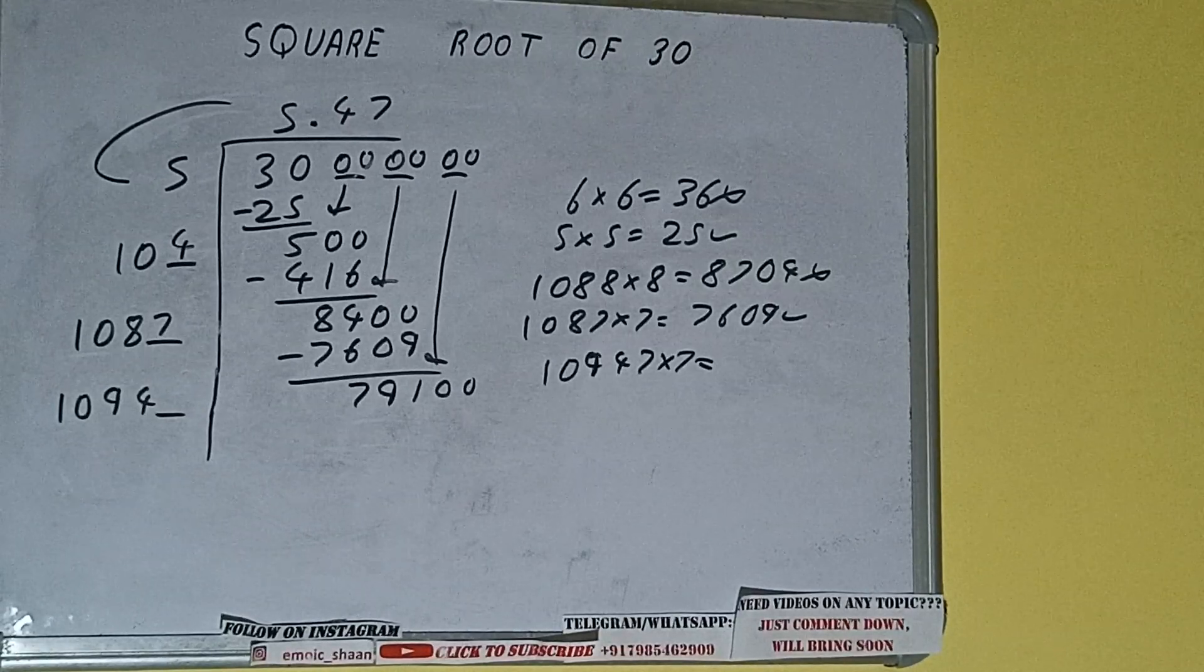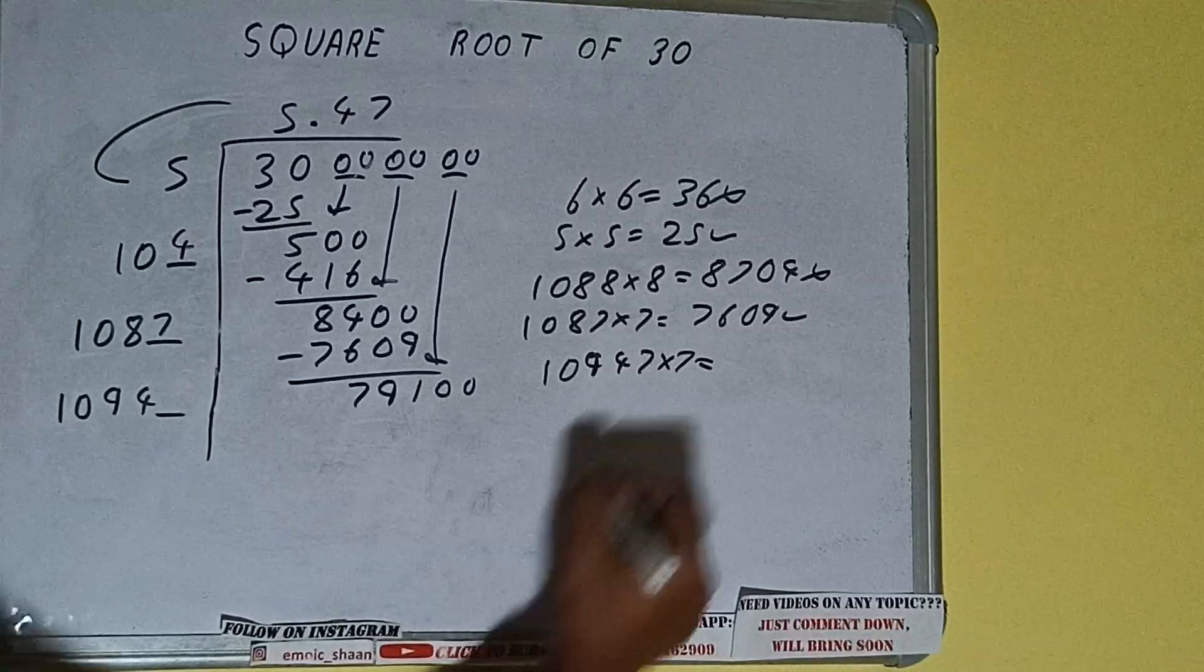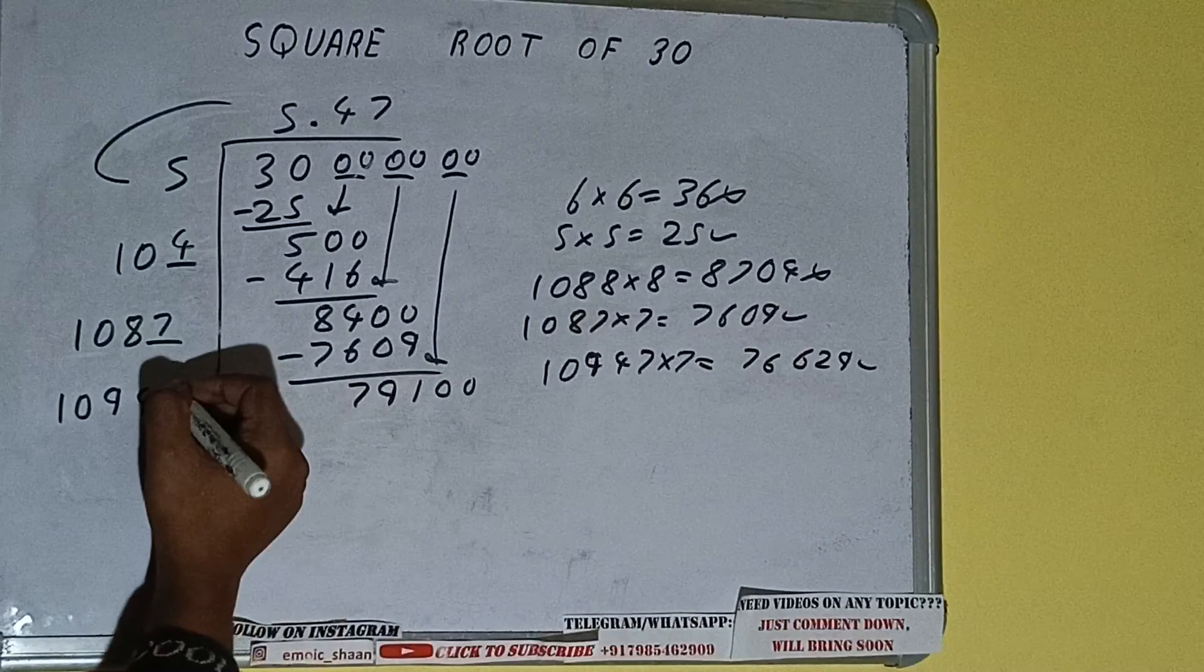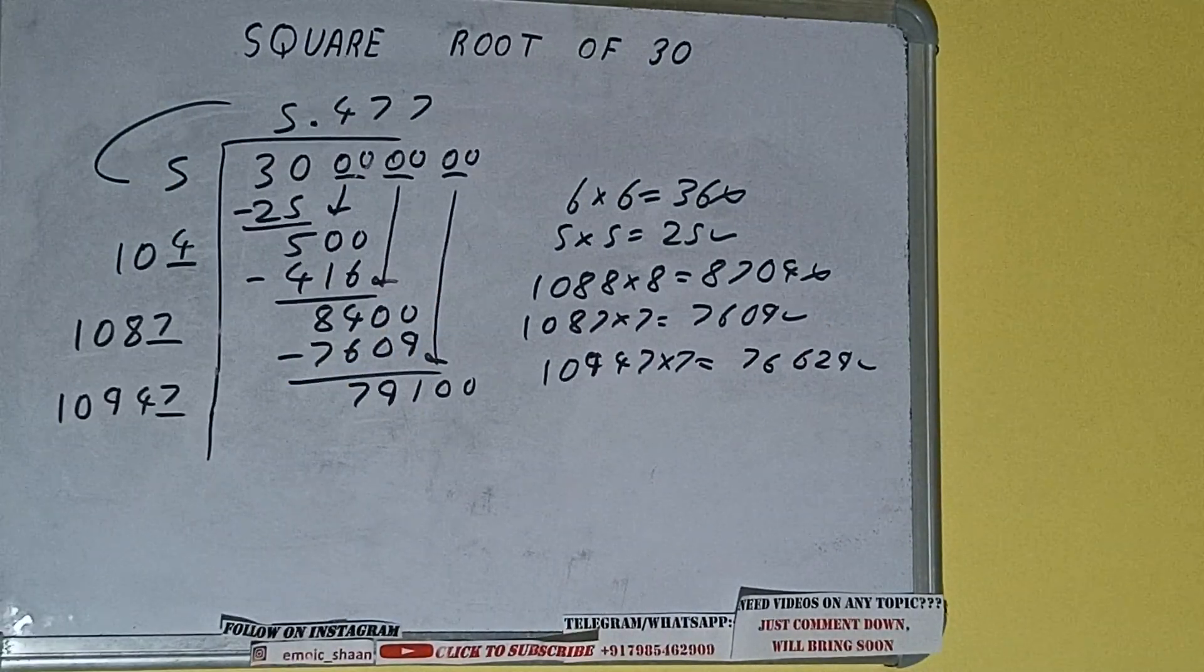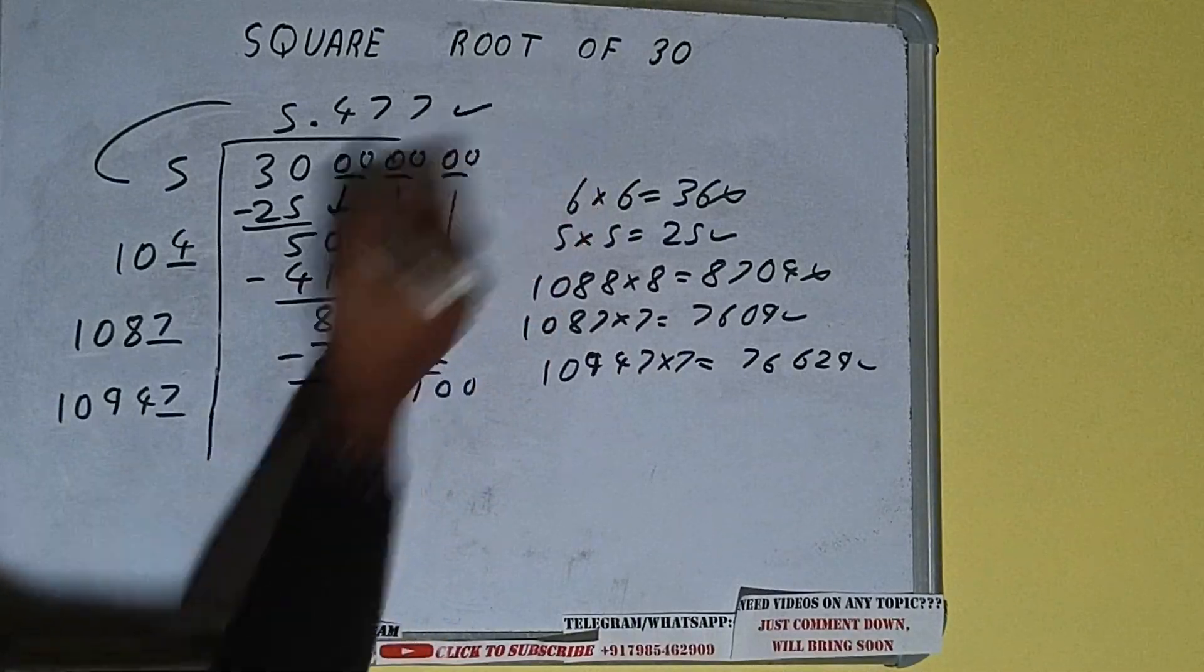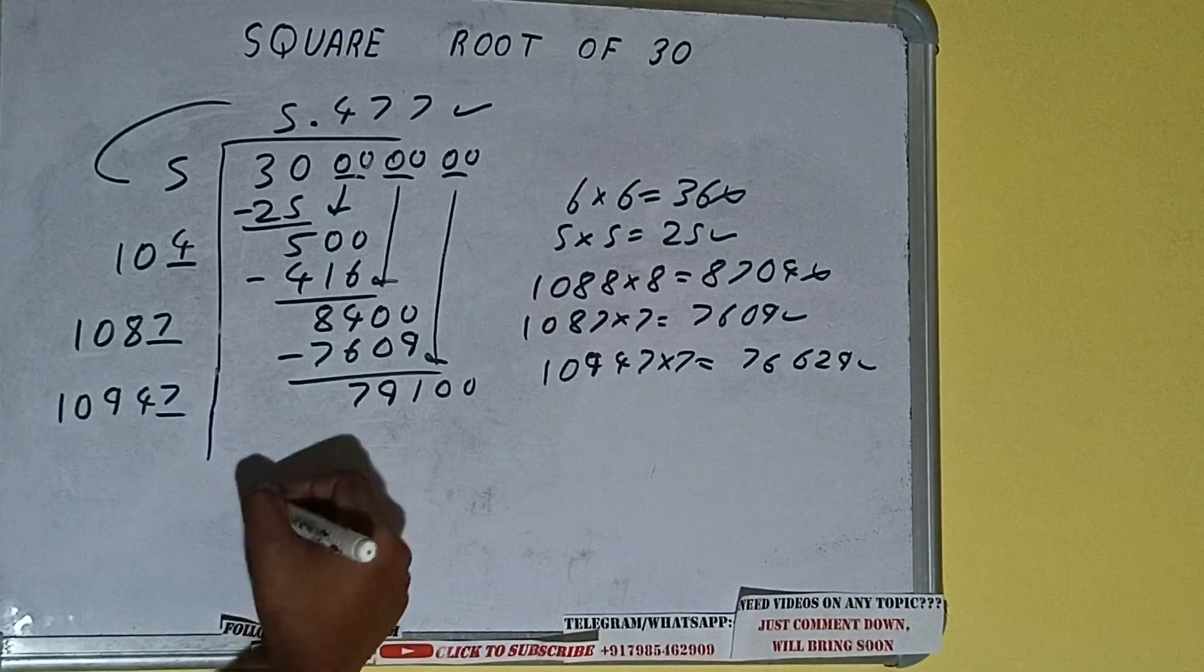and we'll be having 76,629, which is good to take. So 7 here and 7 here, but we don't need to calculate because we got the answer correct up to 3 decimal places. So square